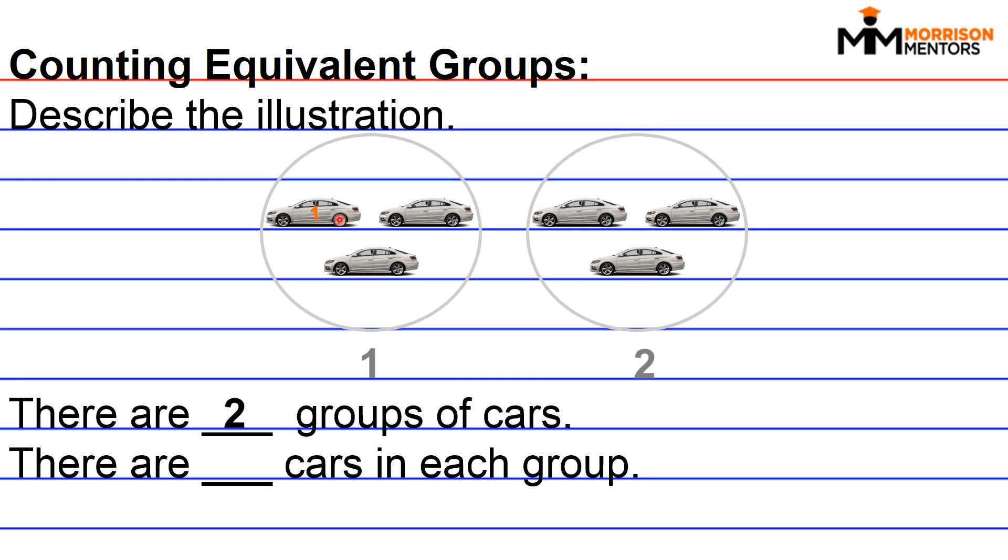So we have one car, two cars, and a third car. So the last blank is that there are three cars in each group.